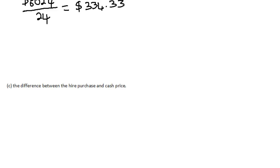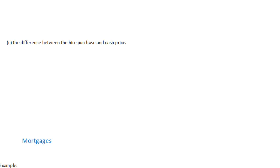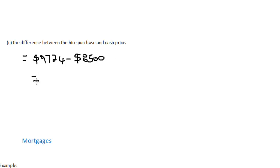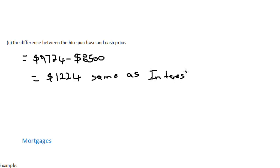Part C asks us to determine the difference between the hire purchase price and the cash price. All we have to do is subtract the cash price from the hire purchase price: $9,724 minus $8,500, which equals $1,224. You should note that this is the same as the interest charged.